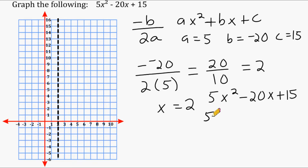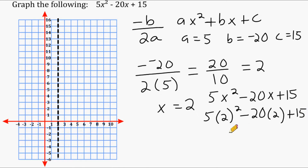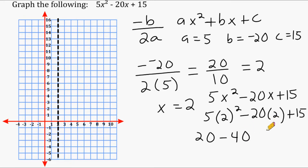We substitute x equals 2 into the equation: 5 times 2 squared minus 20 times 2 plus 15. Squaring 2 gives 4, and 4 times 5 is 20. Then negative 20 times 2 is negative 40, so we subtract 40. Adding 15 at the end: 20 minus 40 is negative 20, and negative 20 plus 15 is negative 5.